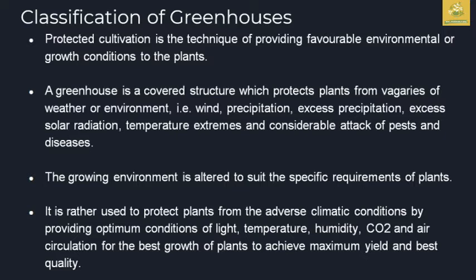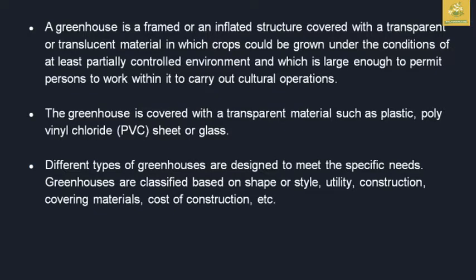Under adverse climatic conditions, we can use the greenhouse to improve yield and quality. The greenhouse has a frame and an inflated structure covering. It is a transplanted material structure where crops are partially grown in a controlled environment. The greenhouse uses transparent materials such as plastic, polyvinyl carbonate, and glass sheet as covering materials.